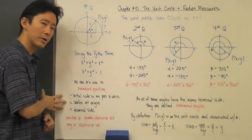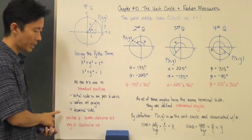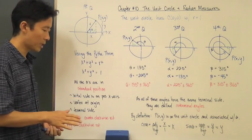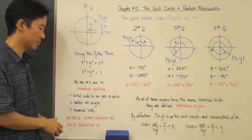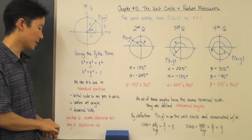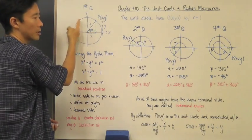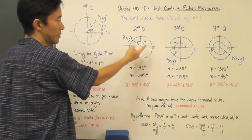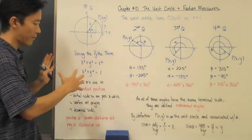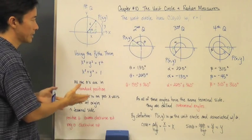Another thing we need to consider is whether an angle is positive or negative. If we talk about a positive angle, starting from the initial side, you go counterclockwise. Similarly, if you have a negative angle, that means you're rotating clockwise. The way I've drawn these, this is a counterclockwise rotation, which means those are all positive angles. So we have the unit circle and an idea of where the angle is, based upon standard position.